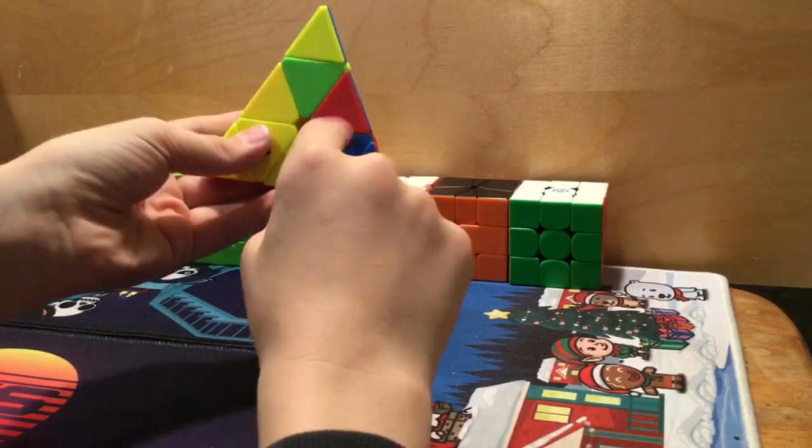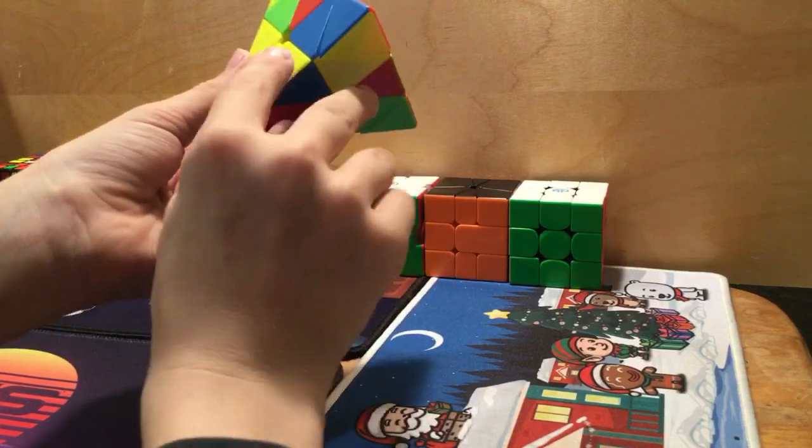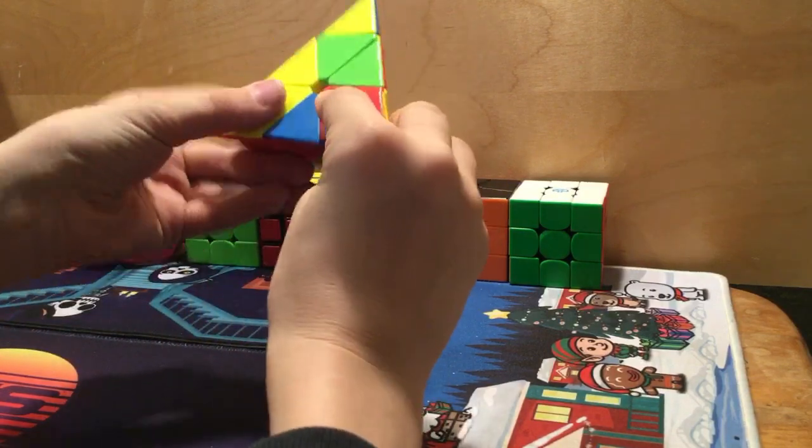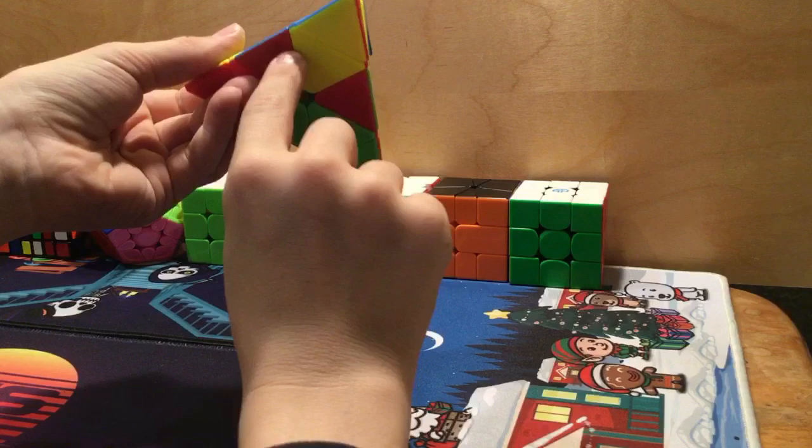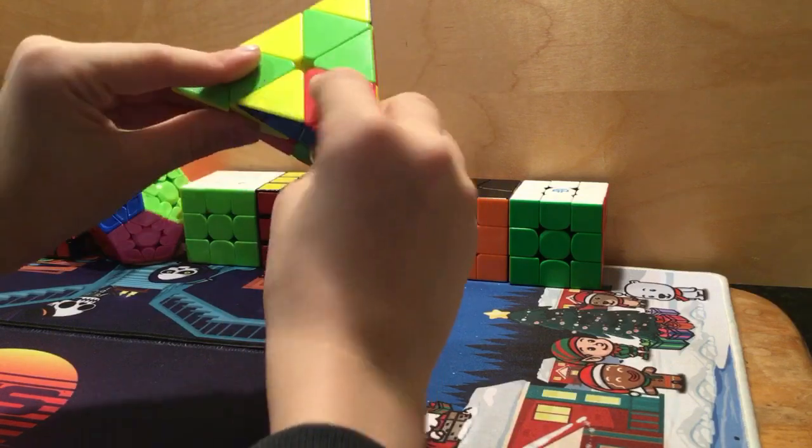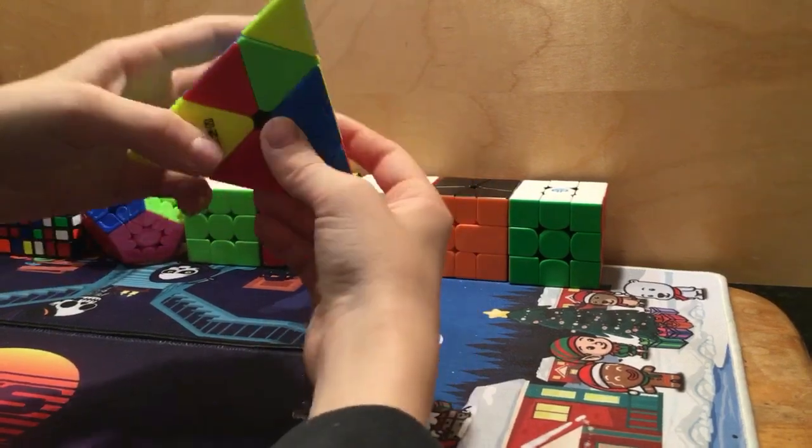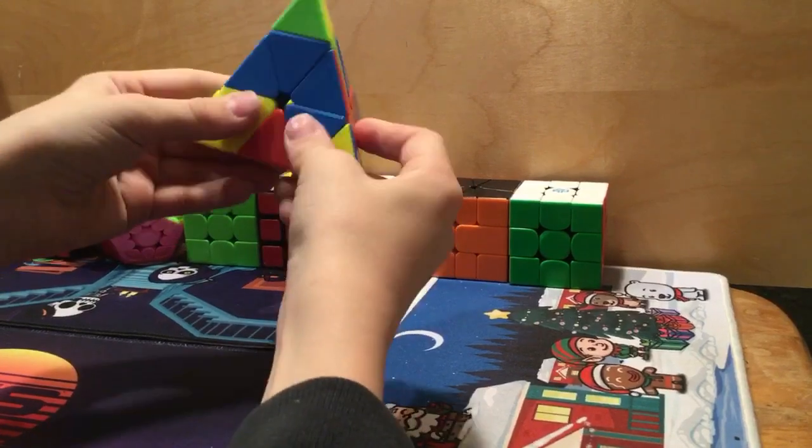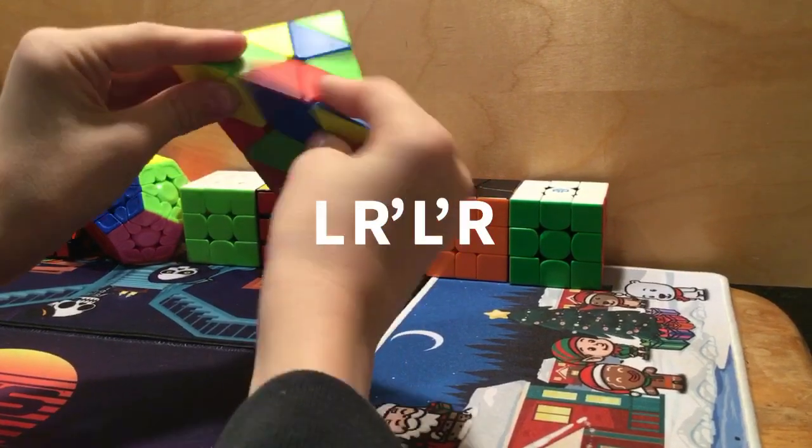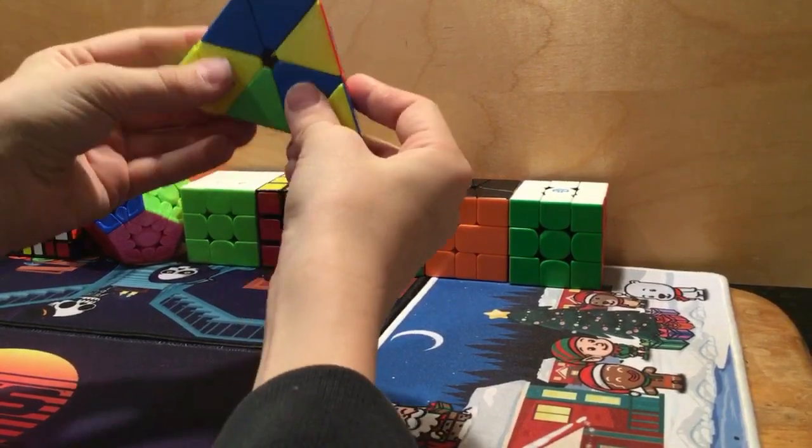Because what that will do is insert this edge into this spot here. See, because now the edge is in there. And then the left-hand version, which is basically just reversing it, goes like this.